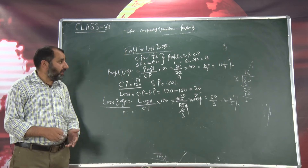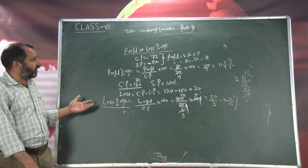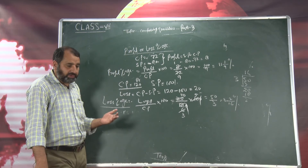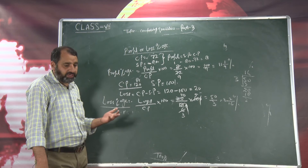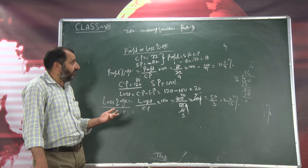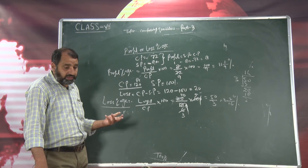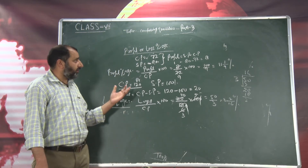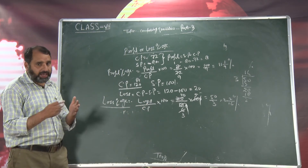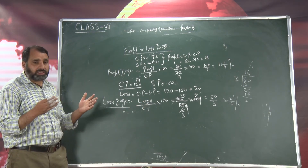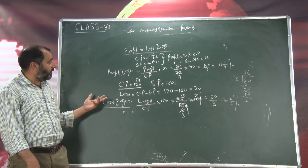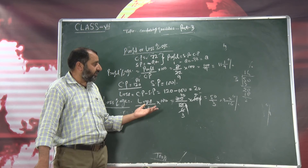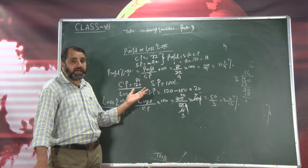Ab yahan is lesson se hamain yeh baat malum ho gai ki how we can compare the quantities — we comparing the quantities in terms of percentage, in terms of ratios, in terms of proportion, in terms of profit, in terms of loss, in terms of selling price or cost price, and in terms of profit percentage or loss percentage.